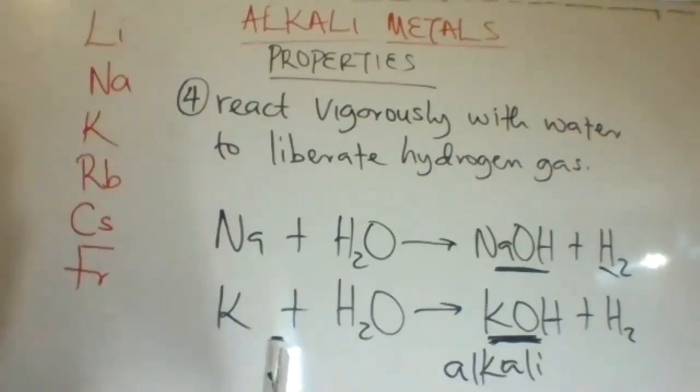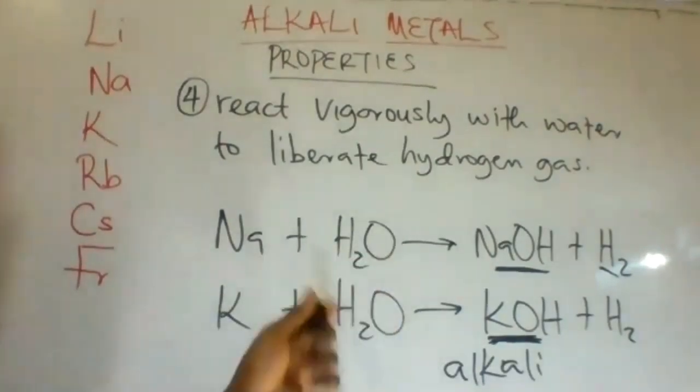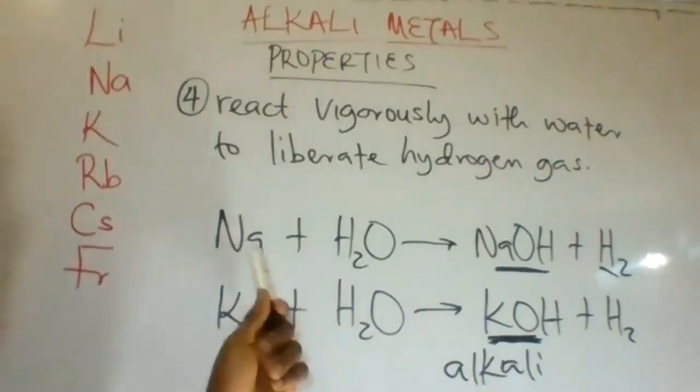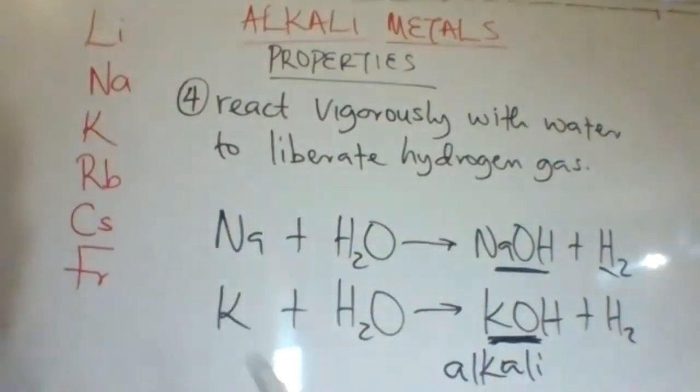Alkali metals are metals that dissolve in water to form alkalis. Sodium combines with water to form an alkali, sodium hydroxide. Potassium dissolves in water to form alkali, potassium hydroxide. Alkalis are soluble bases.